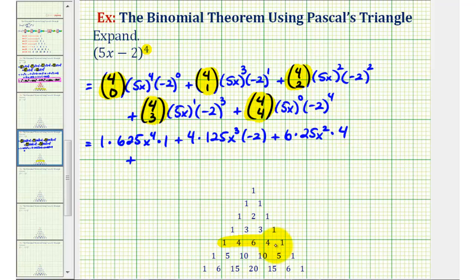Plus 4 choose 3 is equal to 4, so we have 4 times 5x times negative 2 to the 3rd, that's negative 8. And finally, our last term, we have 4 choose 4, that's 1, 5x to the 0, that's 1, and then we have negative 2 to the 4th, which would be positive 16.